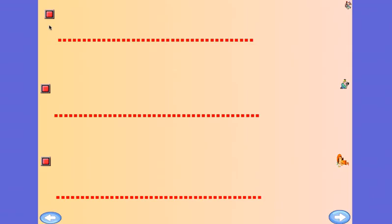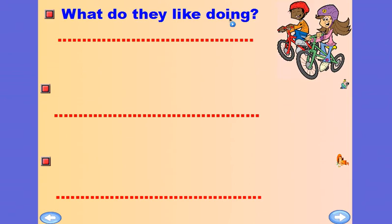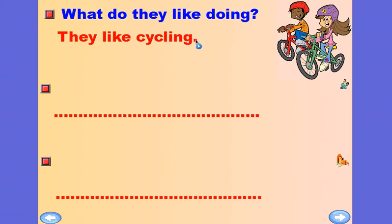Let's see our questions. What do they like doing? We look at the picture — they like cycling. Don't forget to add -ing. They like cycling.